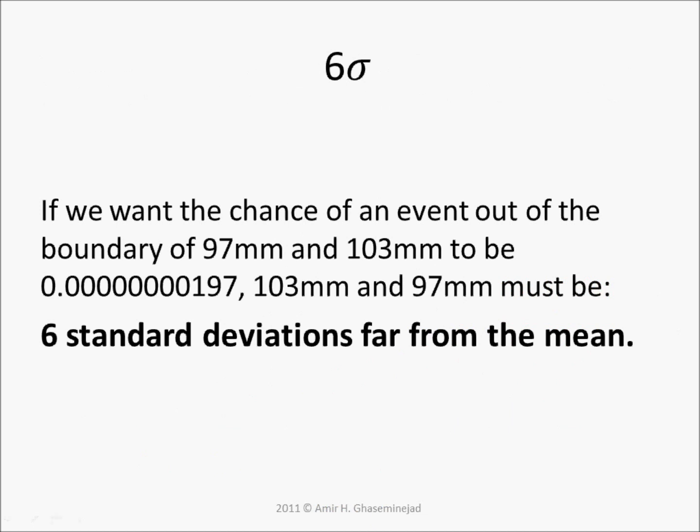If you want the chance of an event outside the boundaries of 97 millimeters and 103 millimeters to be less than 2 out of a billion, then 103 and 97 must be six standard deviations away from the mean.